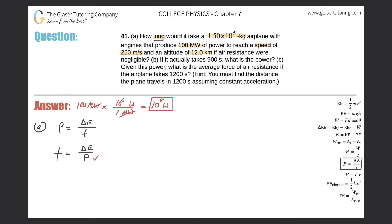Now in order to find the time, I still need to find the change in energy. We have to think about what types of energy are involved. They're talking about speeds and heights, so both potential and kinetic energy are part of this problem. I'm going to expand delta E to include the change in kinetic energy plus the change in potential energy, divided by power.